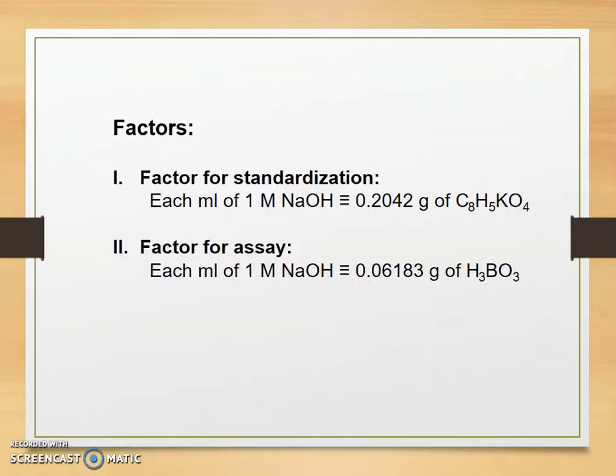Factor for standardization: each ml of 1 molar sodium hydroxide gives 0.2042 grams of potassium hydrogen phthalate. Factor for assay: each ml of 1 molar sodium hydroxide will give 0.06183 grams of boric acid.